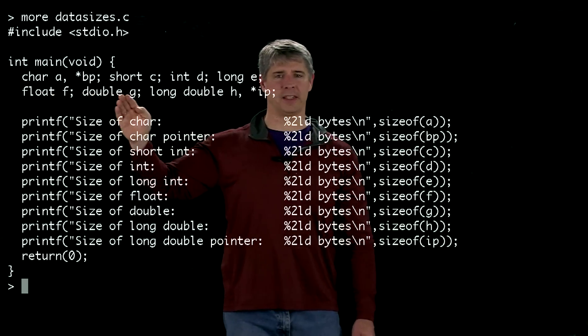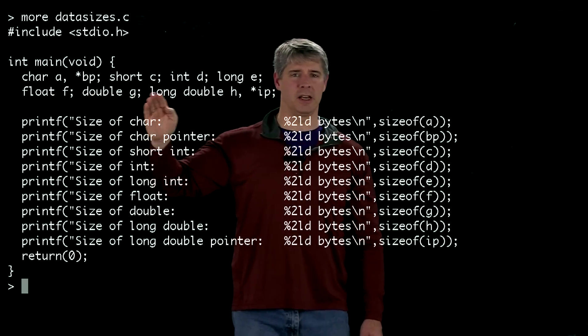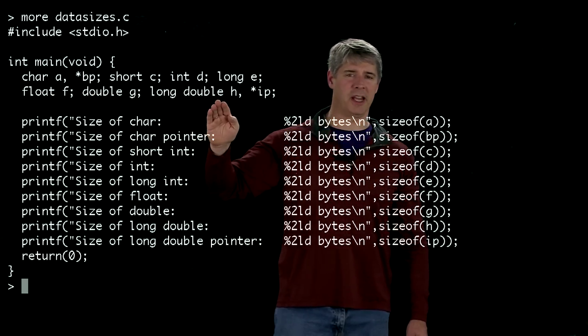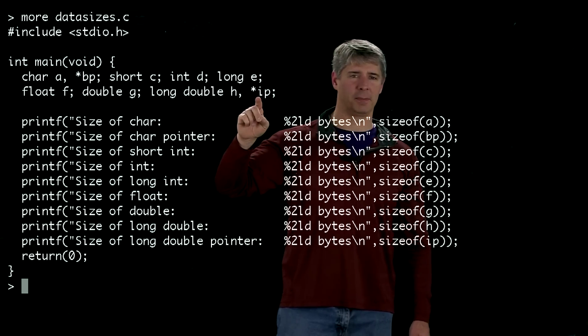We've got a floating point f, we've got a double precision floating point g, we've got a long double precision h, and we've got a pointer to something of type long double.